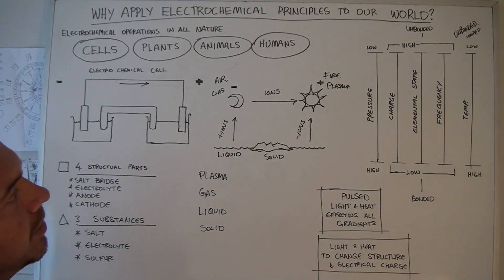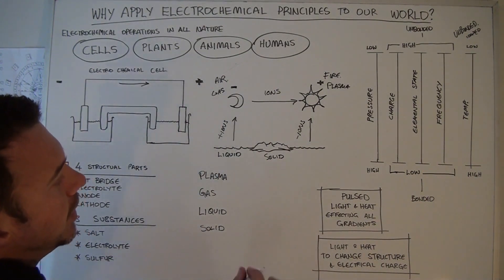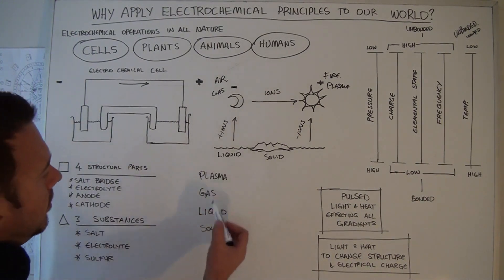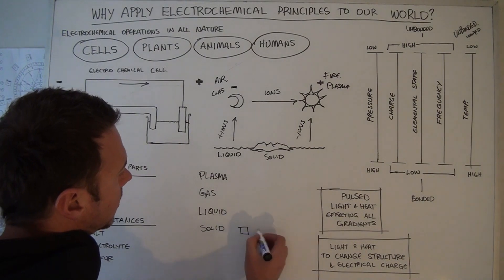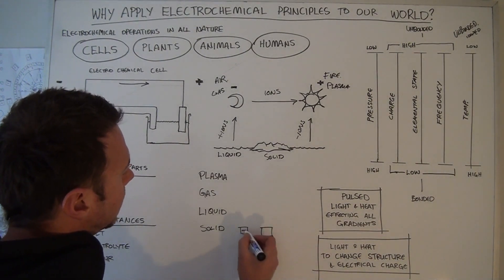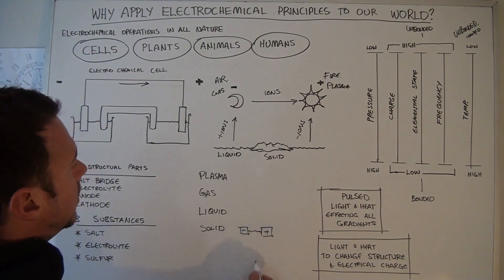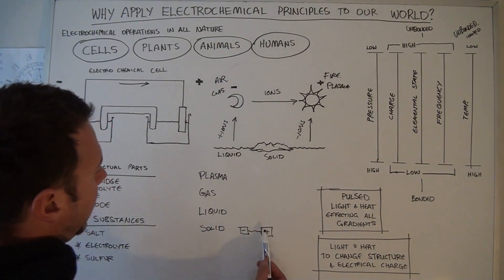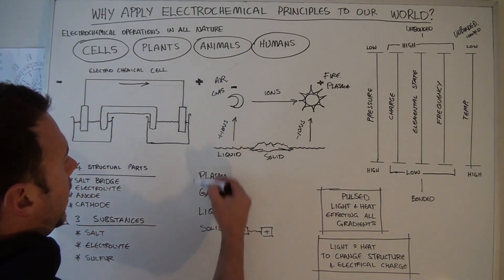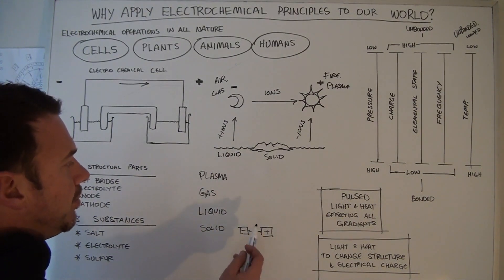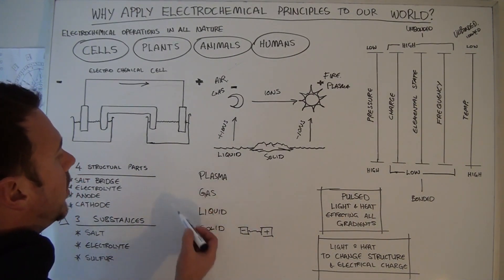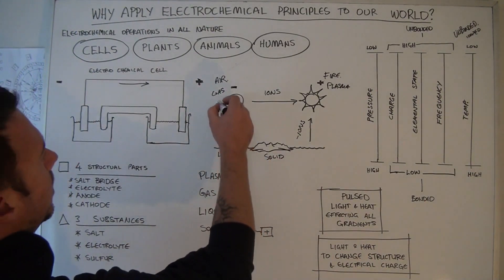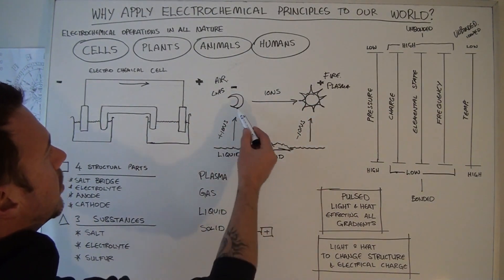We can also look at it in terms of bonded and unbonded elements. Solid is bonded elements — positive and negative — and they are bonded. Plasma is unbonded, ionized elements. So there is a gradient from bonded particles up to a higher energy state in the plasma where they are unbonded, and this process is also happening through this operation.